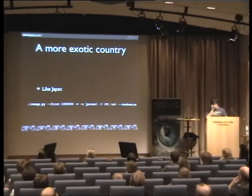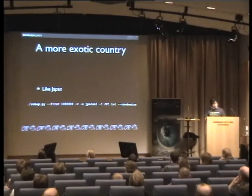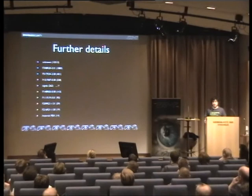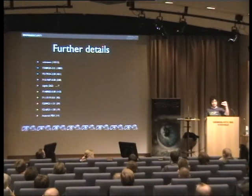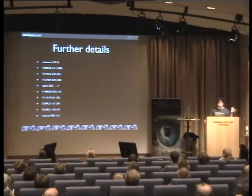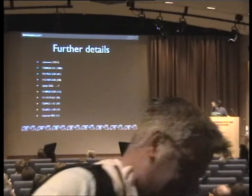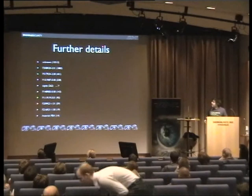I also looked at Japan, which seemed a bit mysterious. The numbers are quite different — unique user agents is much lower. I scanned the first 1 million IP addresses, and most did not have a user agent string. What I was doing is looking at the user-agent or server header — just like HTTP headers — and dumping any that exist to a database. In Japan, most seem to have no user agent. Also interesting was 'Algida', which I'll talk about later.